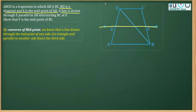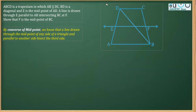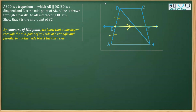This line drawn through E, parallel to AB, intersects side BC at point F. What we are required to prove is that F is the midpoint of BC.